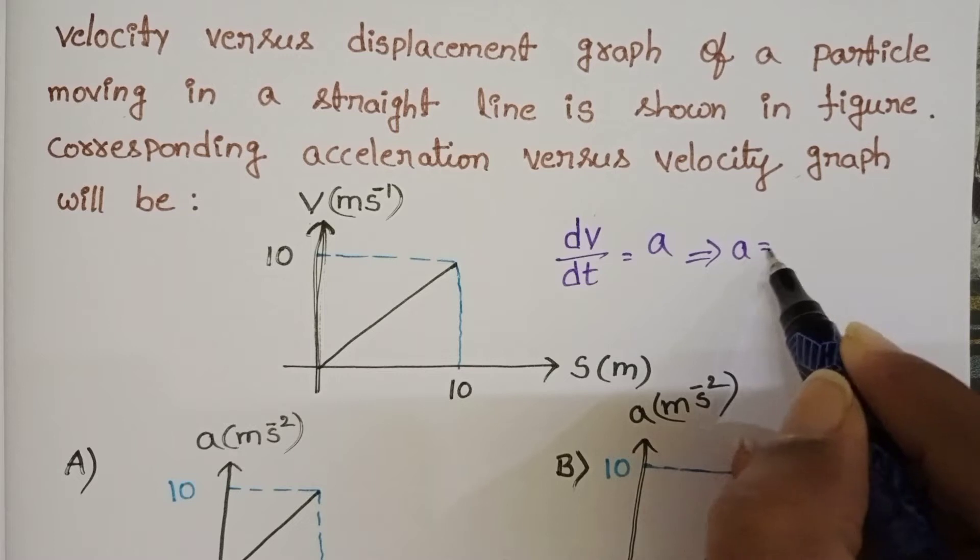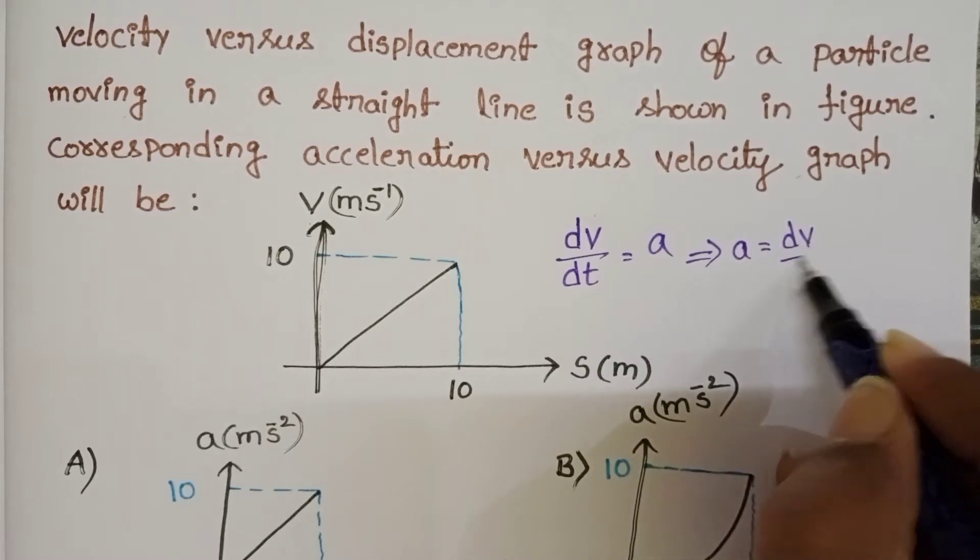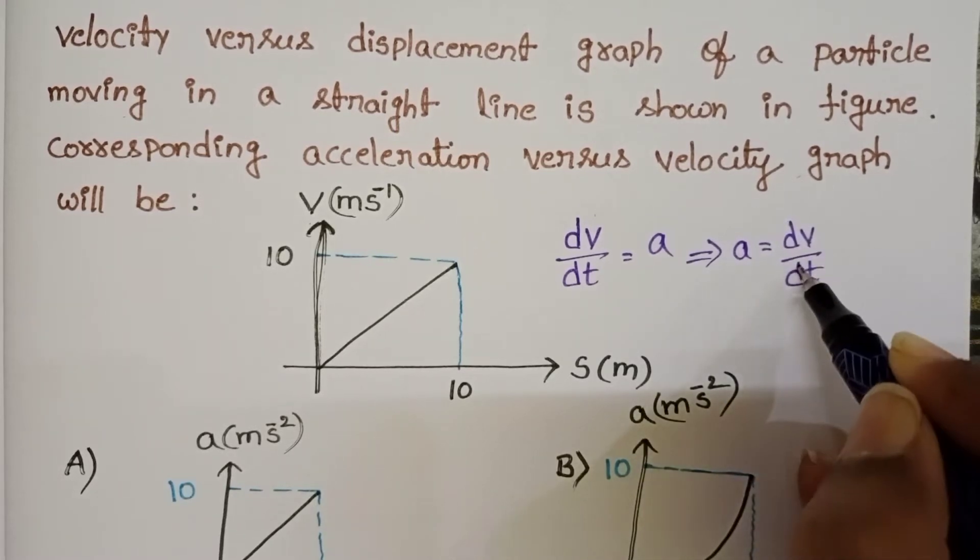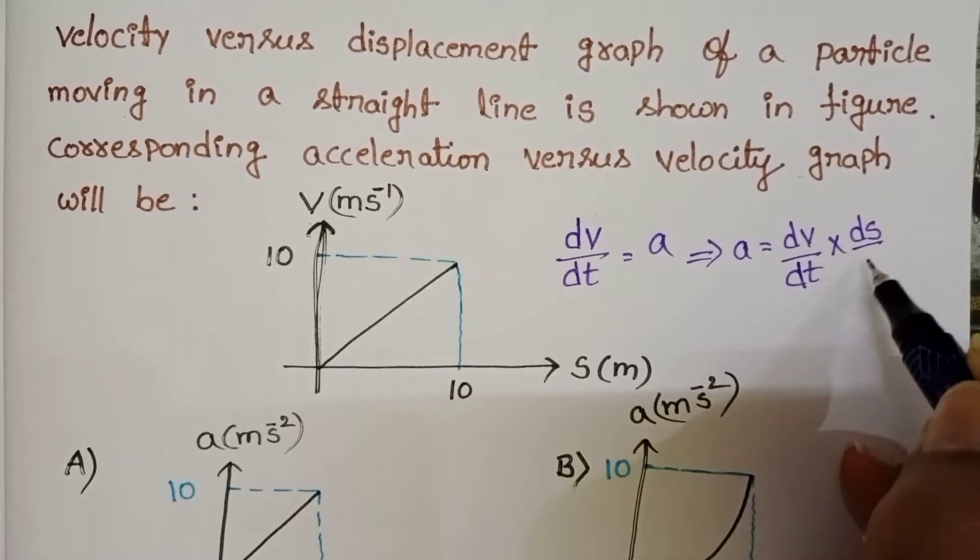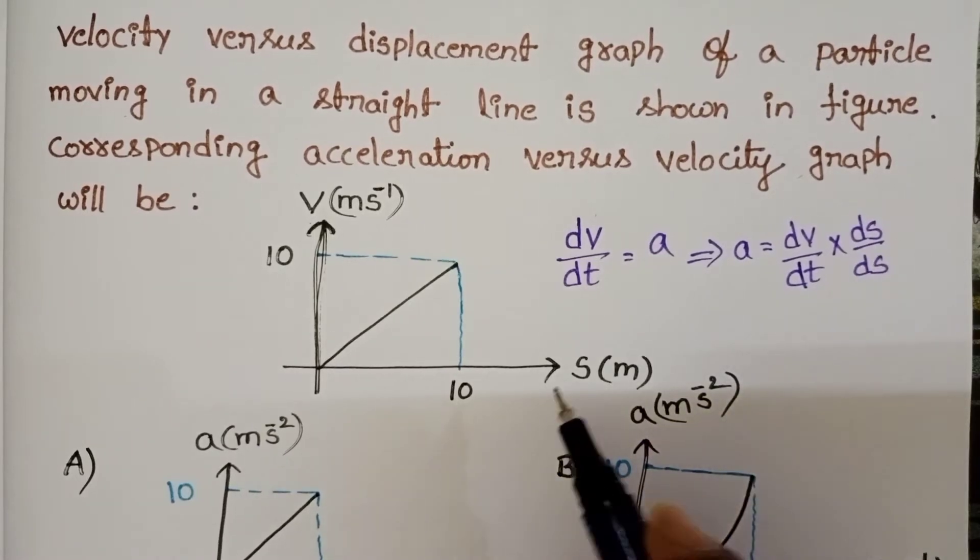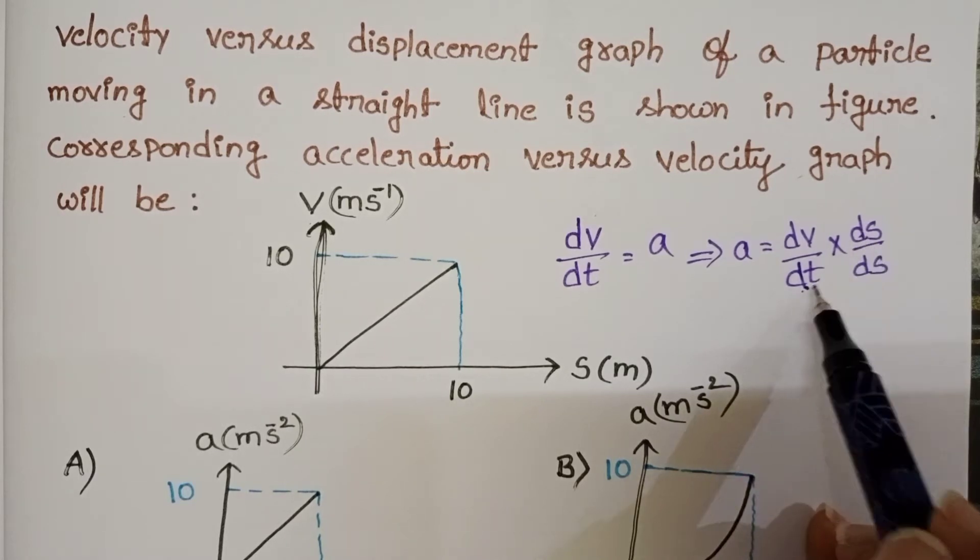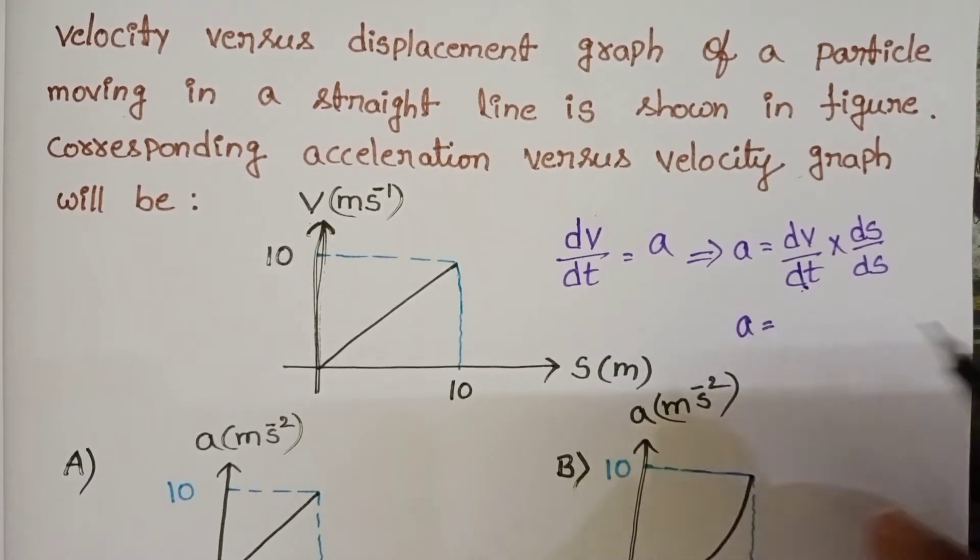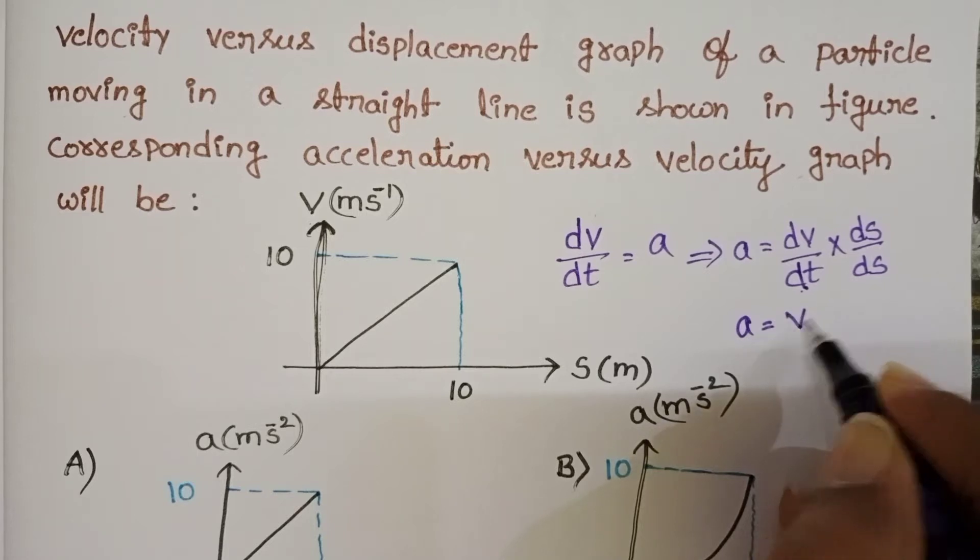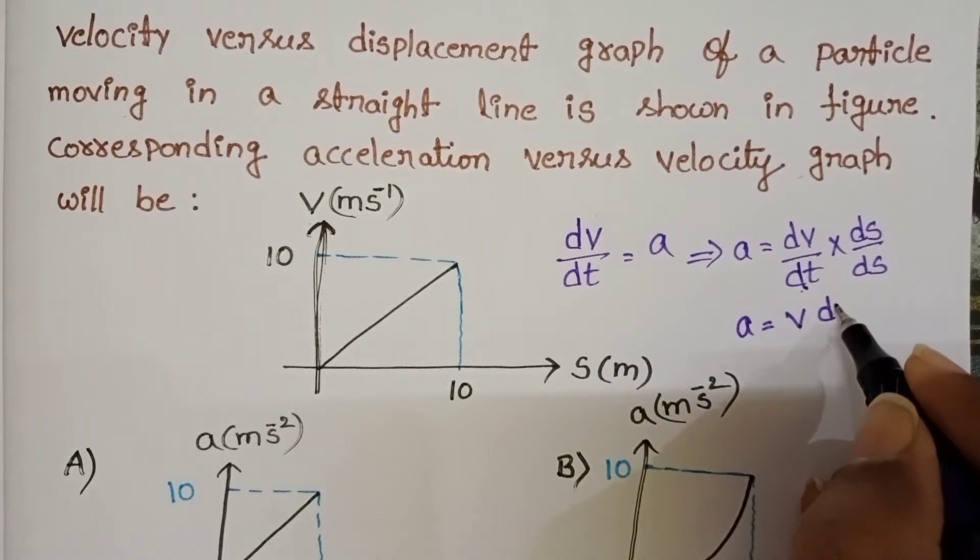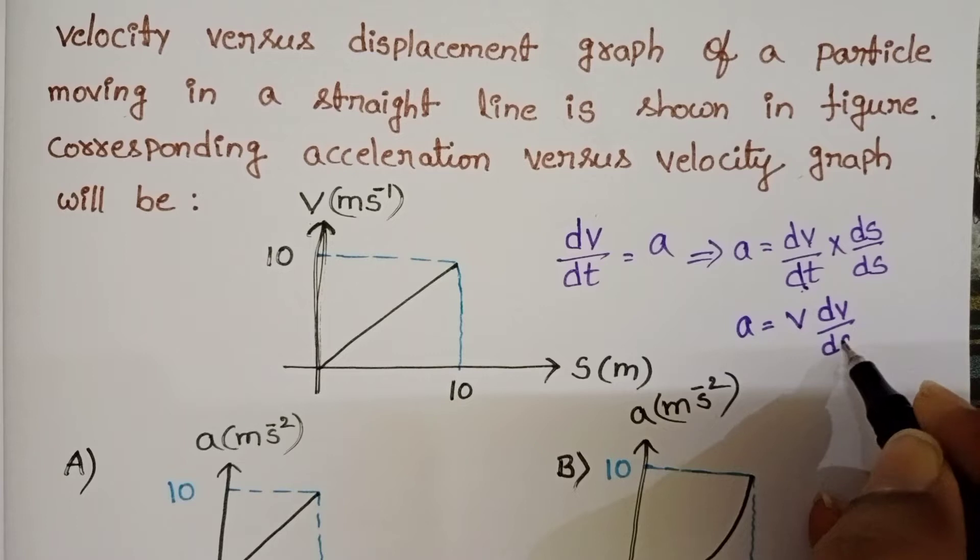a equals dv by dt. Multiply and divide by ds. Rate of change of displacement gives velocity, so acceleration equals velocity into dv by ds.